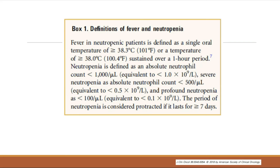There is some institutional variability in what is accepted as neutropenia, specifically for prophylaxis. For example, at Moffitt, for heme malignancy patients, we generally start prophylaxis when the ANC is less than 500 — meeting criteria for severe neutropenia. On the BMT floors, we use a cutoff of 1,000. When you start working, you need to be familiar with the institutional protocol for initiation of prophylaxis.